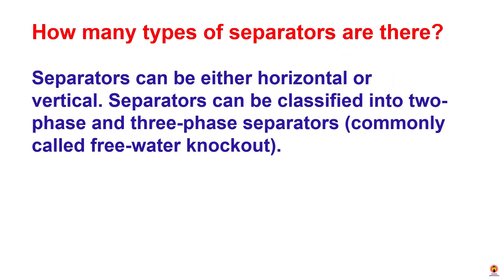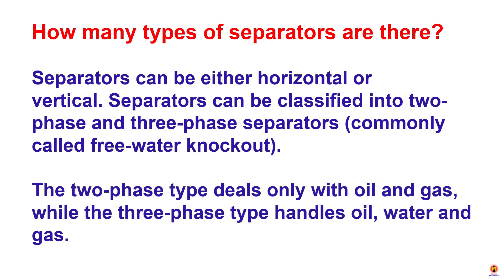How many types of separators are there? Separators can be either horizontal or vertical. Separators can be classified into two-phase and three-phase separators. The two-phase type deals only with oil and gas, while the three-phase type handles oil, water, and gas.